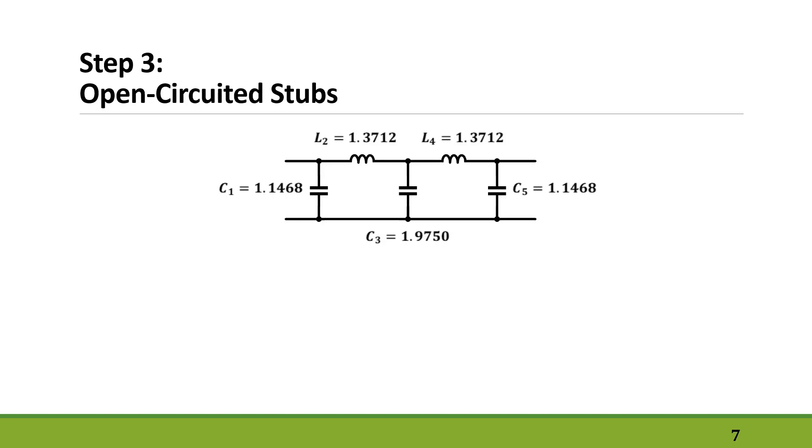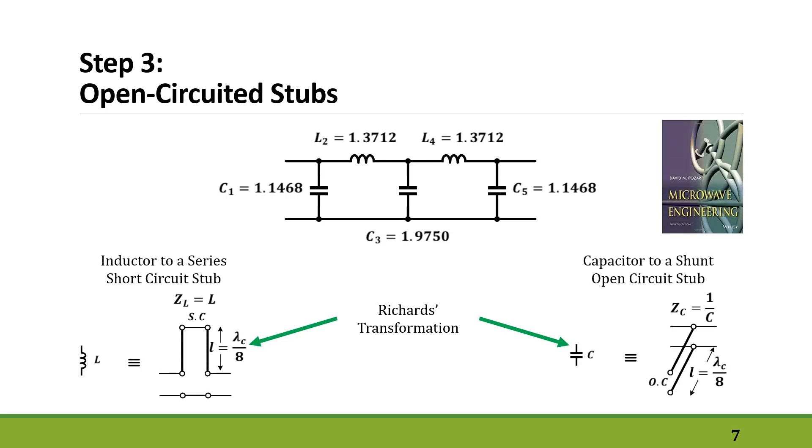In order to do that, there is something called Richard's transformation which turns an inductor to a series short-circuit stub with the length of lambda over 8, and a capacitor to a shunt open-circuit stub, again with the length of lambda over 8.